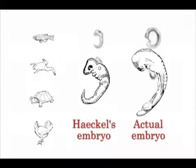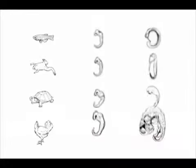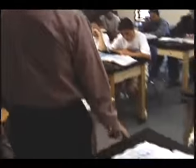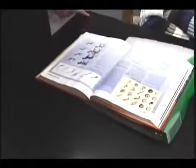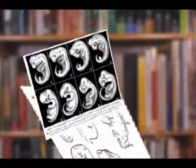The real damage was done when these drawings entered biology textbooks decades ago, and they've never really been taken out. If you open a high school biology text now, or even a college biology text, you'll find these drawings — although they may not refer to them as Haeckel's drawings — and in fact they trace their ancestry directly to Haeckel. And it's really damaged our understanding of development and biology in general.